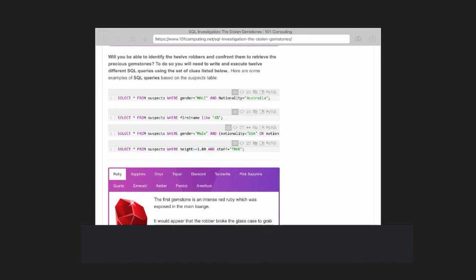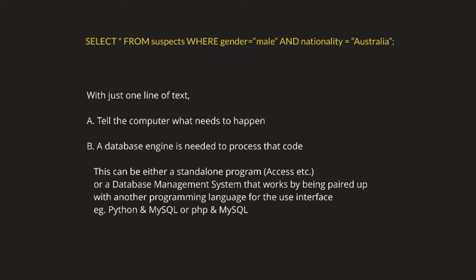I've copied the first example here, and it says: select everything — that's the little star — from the table 'suspect'. Then you're becoming a bit more specific by instructing that you only want the records where the field 'gender' will be 'male' and the field 'nationality' will be 'Australia'.